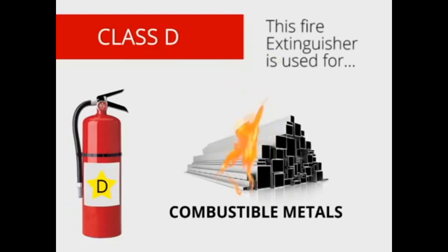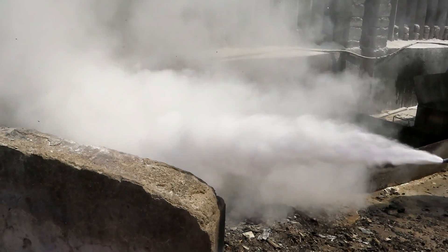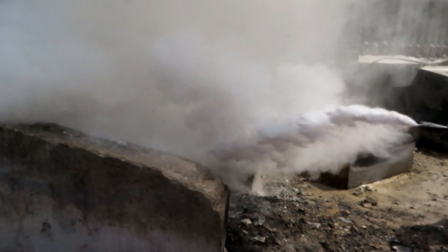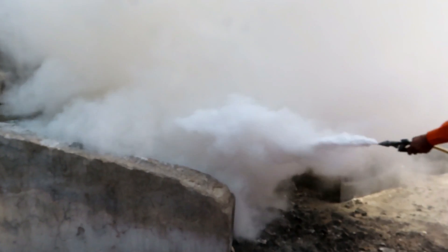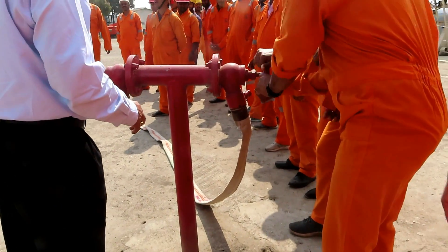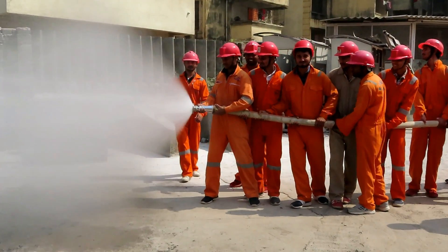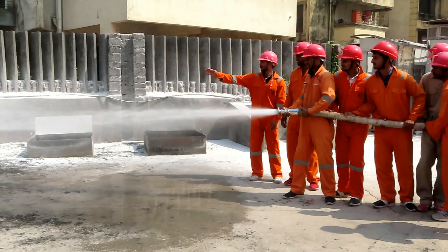Dry powder extinguishers smother fires by forming a barrier between the fuel and the source of oxygen. Fire hoses are kept in lockers alongside the bulkhead. These are unlocked and can easily be opened. Point the nozzle towards the fire. In a real emergency, you have to hold the hose with only two persons.